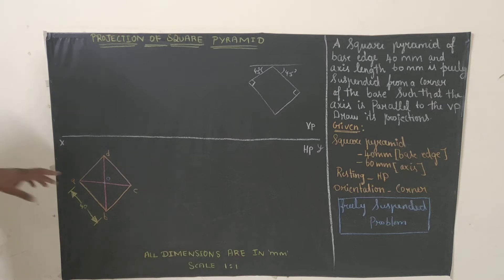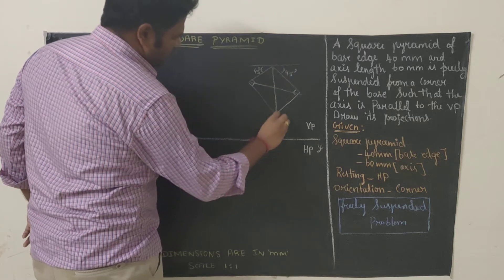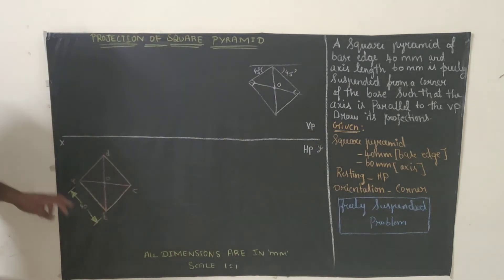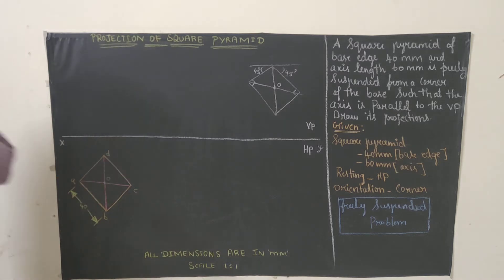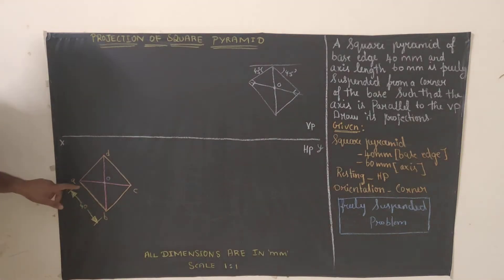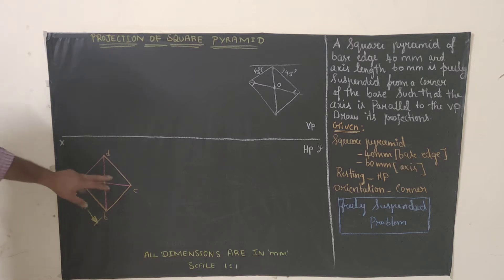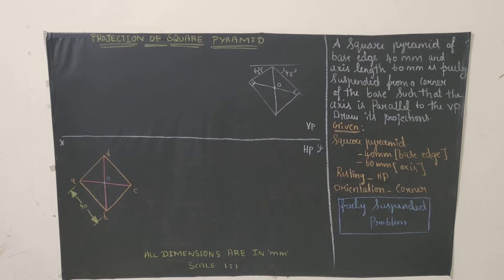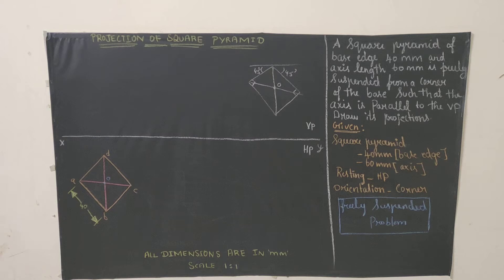Join A to C and B to D so you get the center point O. The slant edges OA, OB, OC, OD are important — draw them very dark with your HB pencil. Join OA, OB, OC, OD — these are the slant edges. The diagram drawn here is called the top view. We have now completed the top view, and by projecting it we can draw the front view.